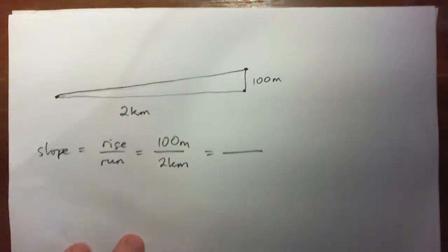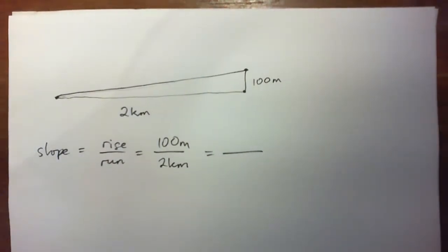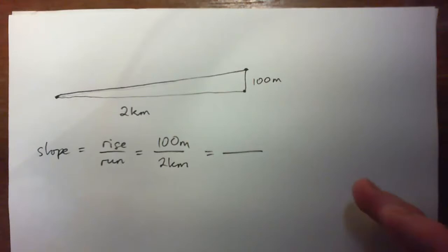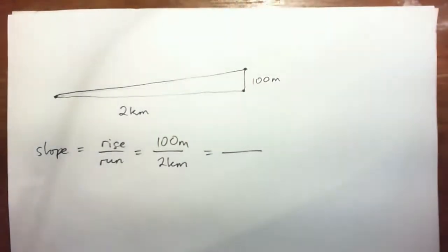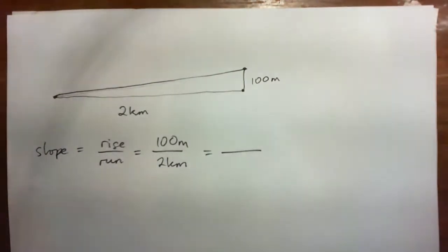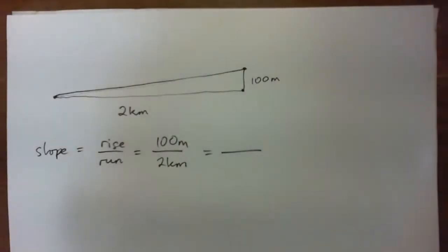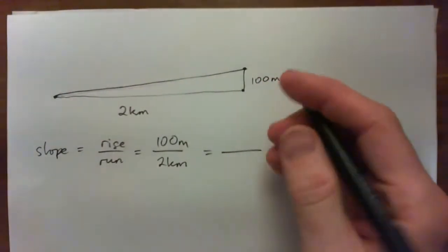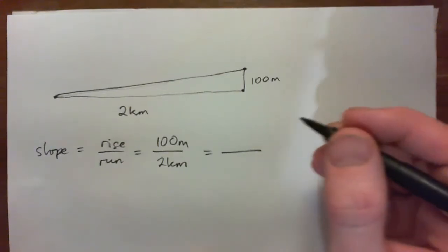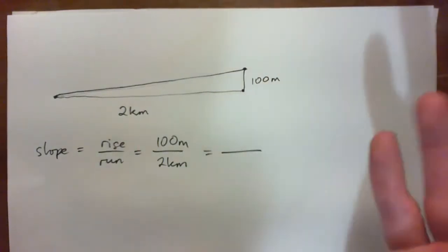One thing you might have thought of is we can't just go 100 over 2 and call that 50 because we got to get these things into the same units of measure. So we can do kilometers or meters. Either one is going to work but both numbers have to be using the same unit of measure. So I'm going to use meters.